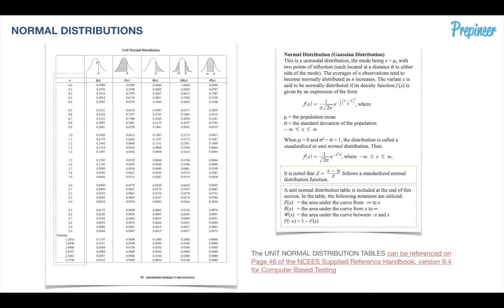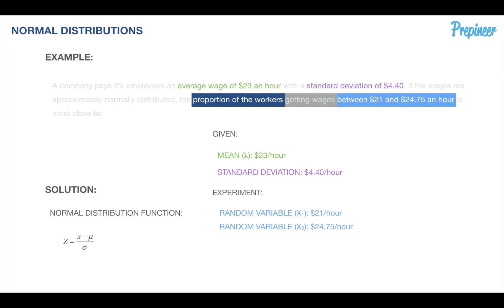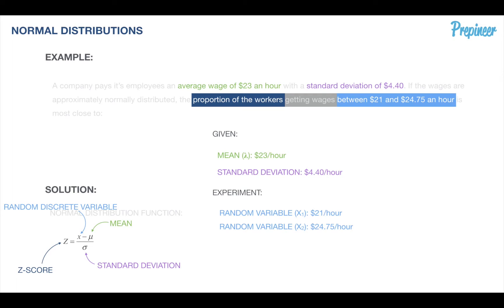The z-score essentially becomes that x column, highlighted on the left side. We have our random discrete variable, our mean, and our standard deviation. Since we have two random variable x's — a lower band and an upper band — we need to determine what the z-score is for each one.